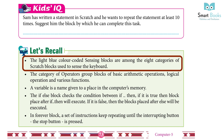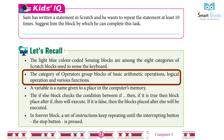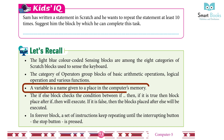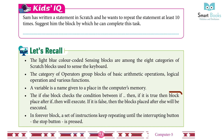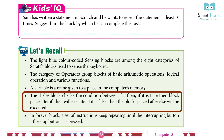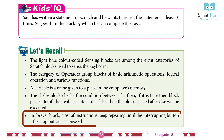Let's Recall: The light blue color-coded sensing blocks are among the eight categories of Scratch blocks, used to sense the keyboard. The operator group blocks cover basic arithmetic operations, logical operations, and various functions. A variable is a name given to a place in the computer's memory. The If-else block checks a condition — if true, the block after 'if-then' executes; if false, the block after 'else' executes. In the Forever block, instructions keep repeating until the stop button is pressed.